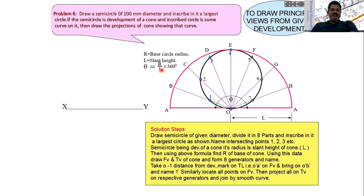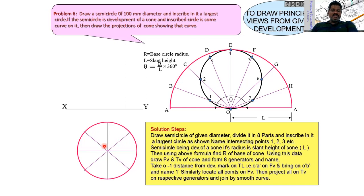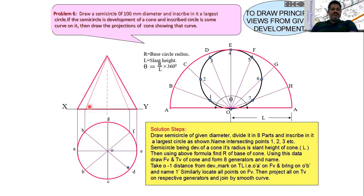After calculating the base radius R, draw the top view first. Draw a circle of radius R, divide it into 8 equal divisions, and name the generators A to H. Project those generators onto the XY line to draw the front view. Draw a vertical line, take the slant length as radius, and intersect to get the apex. Name all generators A-dash to H-dash on front and back.